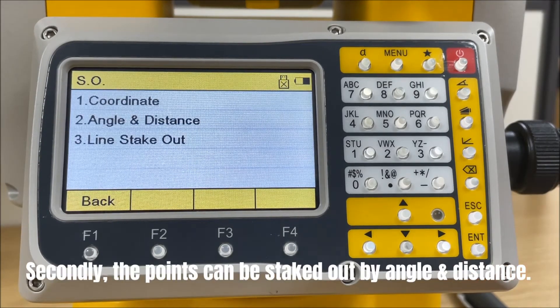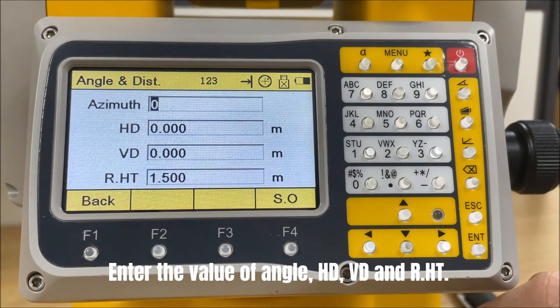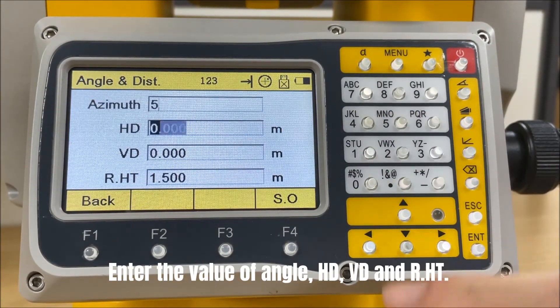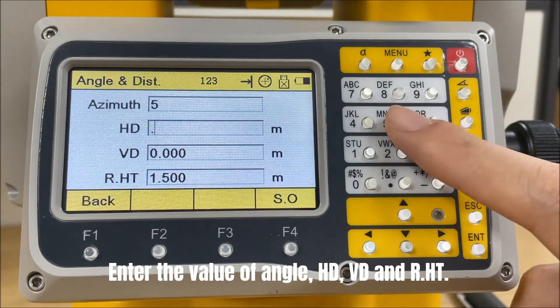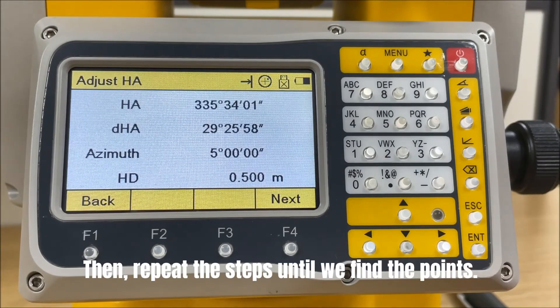Secondly, the points can be staked out by angle and distance. Enter the value of angle, horizontal distance, vertical distance, and reflector height. Then repeat the steps until you find the points.